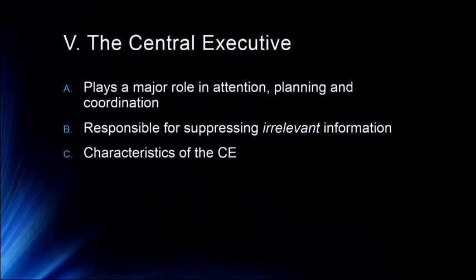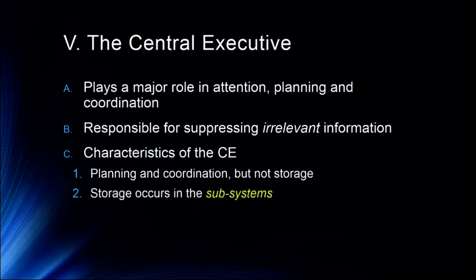Some characteristics of the central executive: there is planning and coordination of information, but not storage. Storage occurs in the subsystems — the phonological loop and the visual spatial sketchpad. The central executive is telling those systems what to do with that information: what to pay attention to, what to ignore, what kind of responses to give, what not to give. All of this is in charge of the central executive.